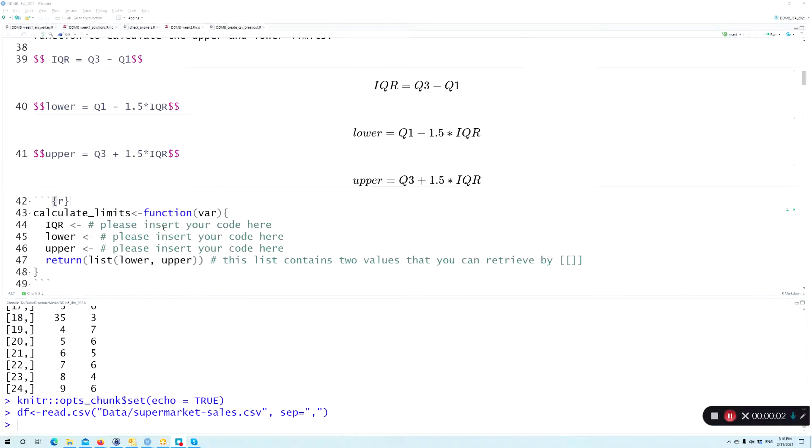In this assignment, I would like you to use a function to create your own function to calculate the upper and lower bound of the interquartile range. This means that outside these limits you can consider data as outliers.